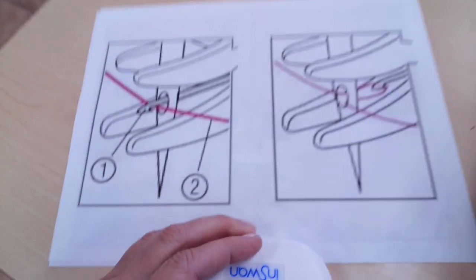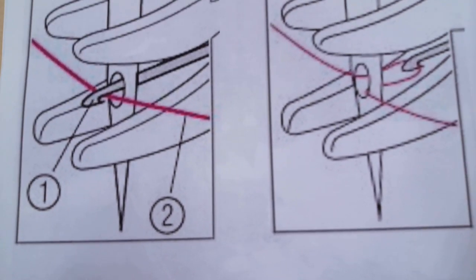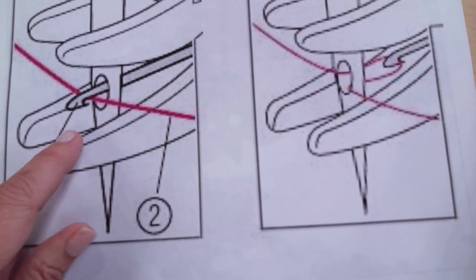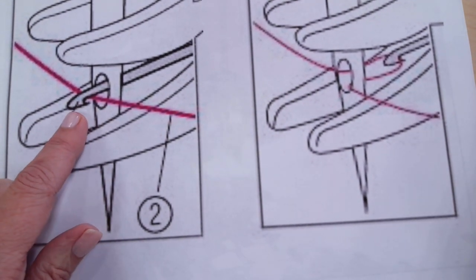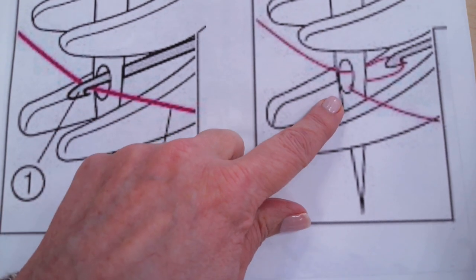So if we take a look over here I've got a couple of pictures to show you. You can see here there's a very small hook that comes through the eye of the needle and it's going to grab the thread and then pull it through.